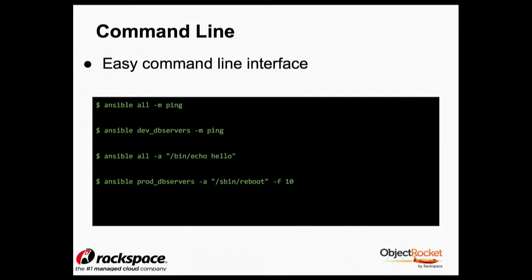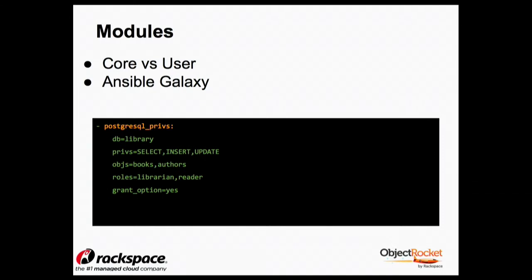This is basically how the command line works. The last one, the -f10, runs in parallel. So you can reboot all your prod DB servers in parallel all at once. That might be a bad thing, or maybe it's a good thing if there's an outage or a problem and you need to reboot those things right away.